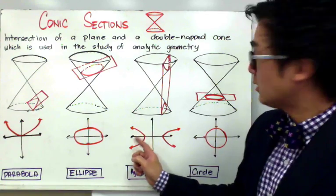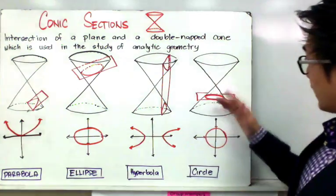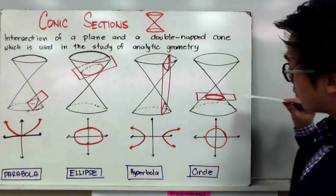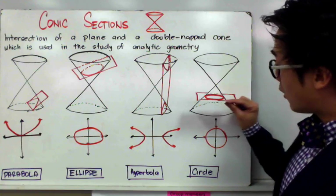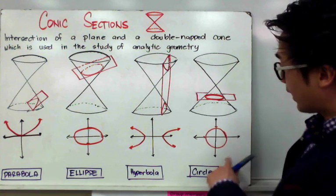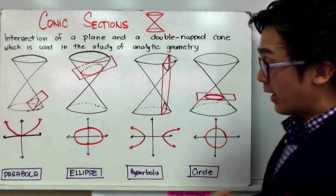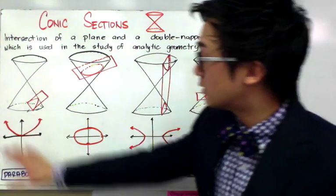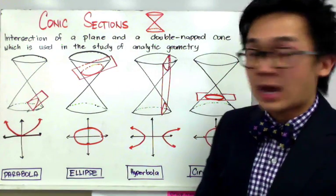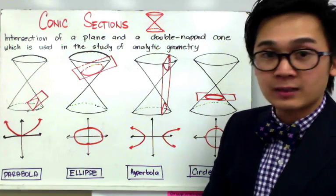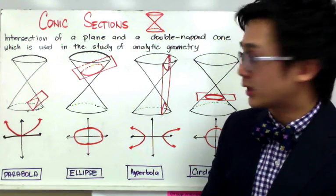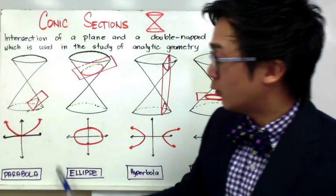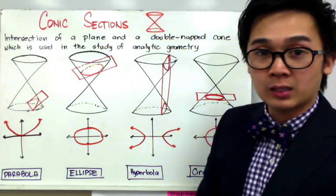And then the last section — given a conic section, if we slice the plane right through the cone horizontally, it will form a circle. These are the conic sections we're going to be working on for our lesson in analytic geometry. Now let's focus on our first conic section, which is the parabola.